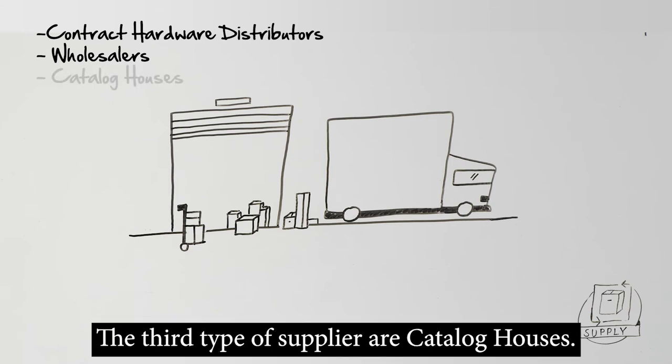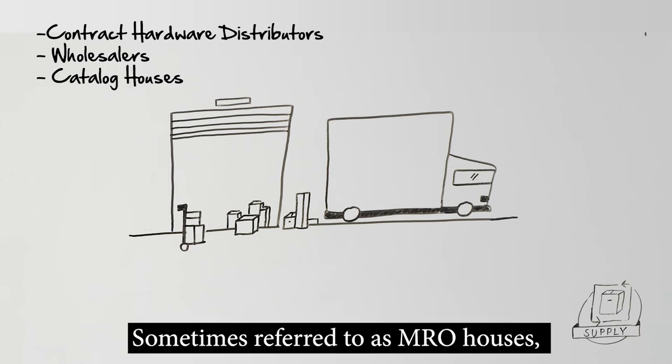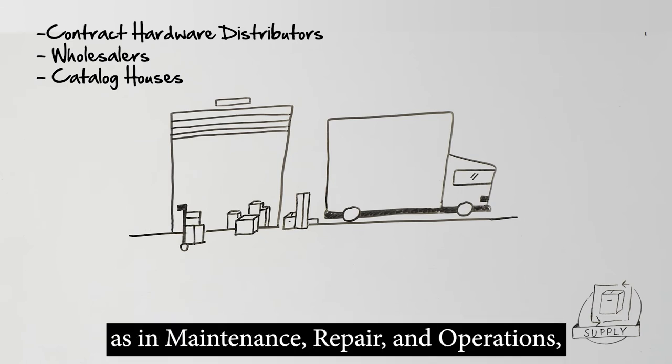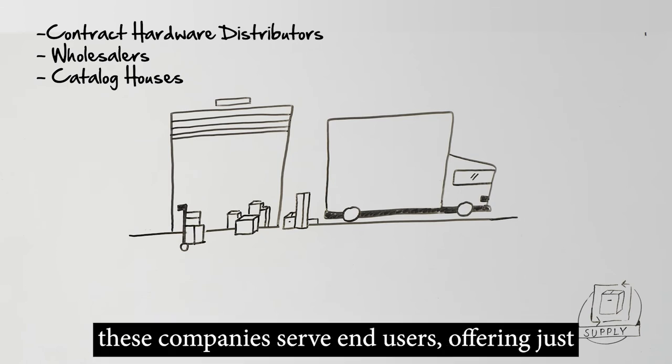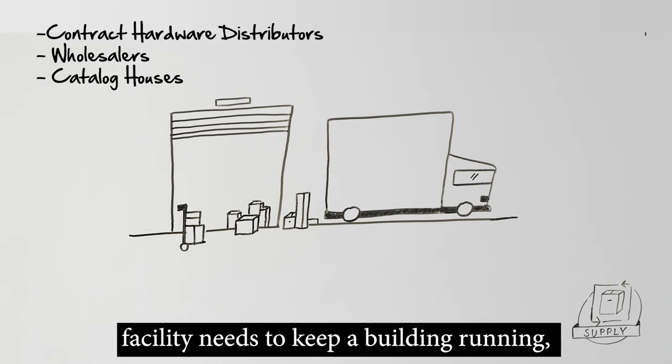The third type of supplier are catalog houses, sometimes referred to as MRO houses, as in maintenance, repair, and operations. These companies serve end users, offering just about everything a typical non-residential facility needs to keep a building running, from plumbing supplies to janitorial equipment.